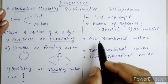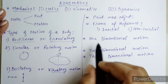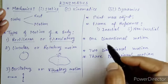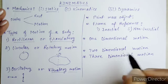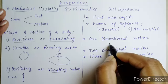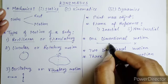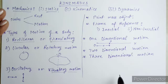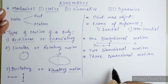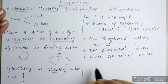On the basis of dimensions there are three types of motion. One-dimensional motion: the motion of an object is said to be one-dimensional if only one out of the three coordinates specifying the position of the object changes with respect to time. Two-dimensional motion: the motion of an object is said to be two-dimensional if two out of three coordinates specifying the position of the object change with respect to time.